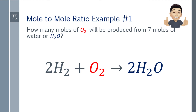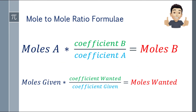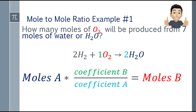After balancing, the equation becomes 2H2 + O2 = 2H2O. Going back to our formula — moles A times coefficient B over coefficient A equals moles B — you can see that moles A is H2O, which is 7 moles of water.